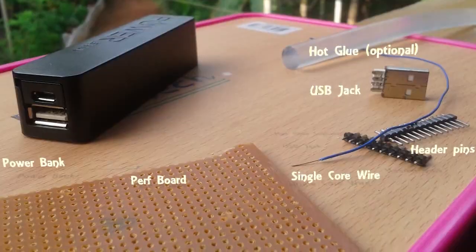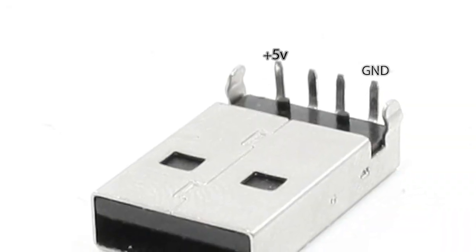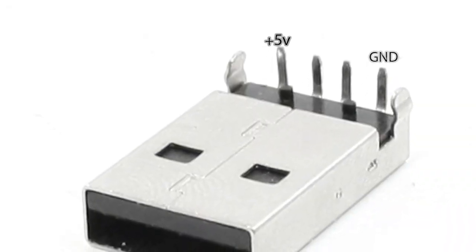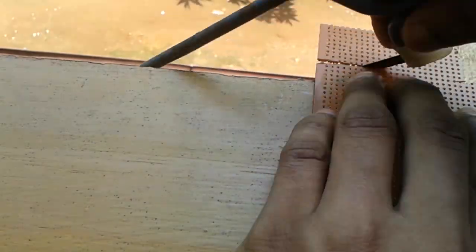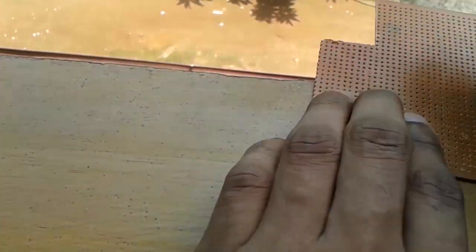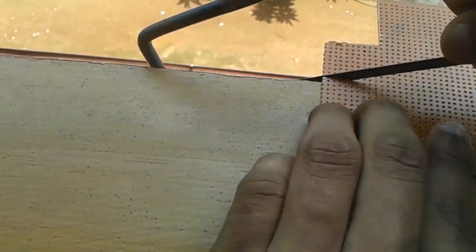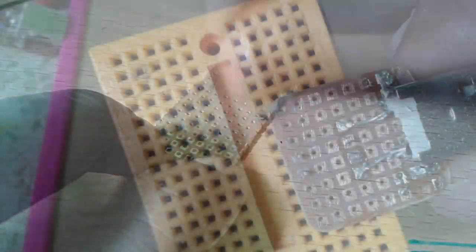First you will have to solder the pins at the two ends of the USB jack to a thin wire. Take out the PCB and cut out a small piece to get a square piece with 10 holes width. After that, clean it using sandpaper to get a clean copper layer, then solder the USB jack into the board making sure it's soldered well.